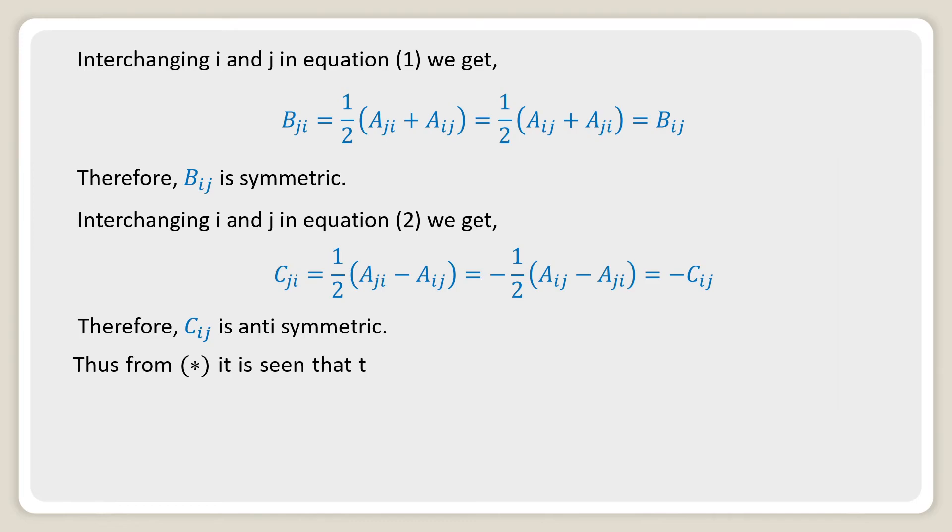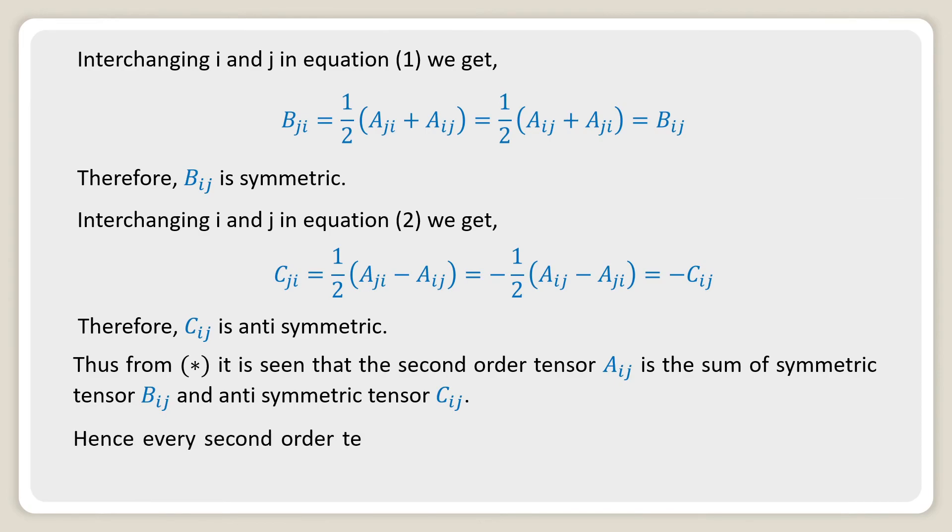Thus it is seen that the second order tensor Aij is the sum of symmetric tensor Bij and anti-symmetric tensor Cij. Hence, every second order tensor, covariant or contravariant, can be expressed as the sum of symmetric and anti-symmetric tensors.